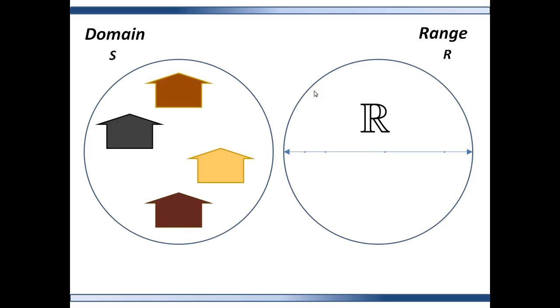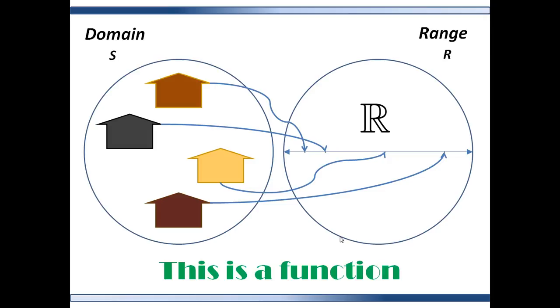Let's do an example. Suppose each element in the domain is a business, and the function maps to a number in the range, in this case, the real number line. The function indicates the number of health plans each business offers its employees. This is a function because every element in the domain is mapping to an element in the range, and mapping to only one element in the range.